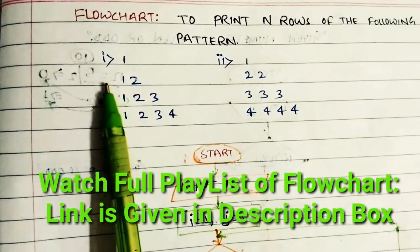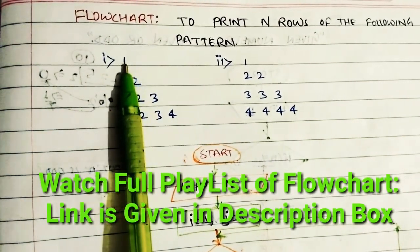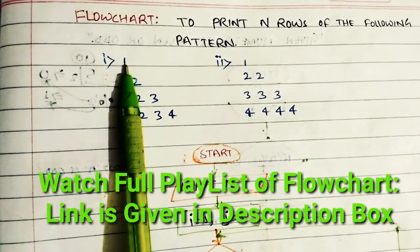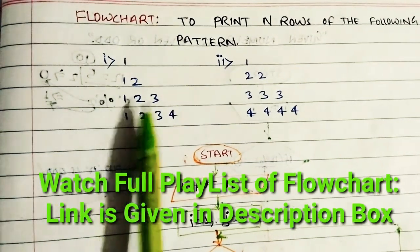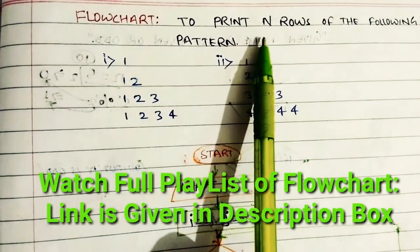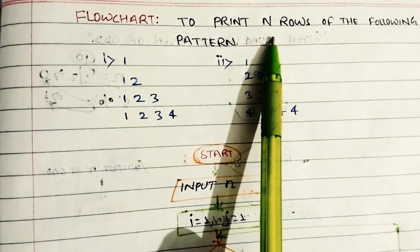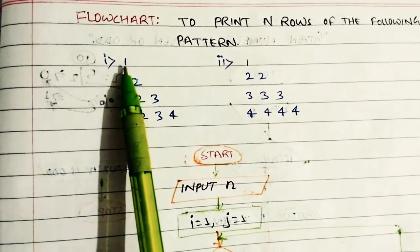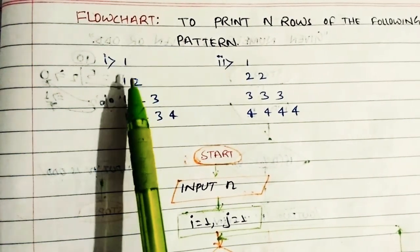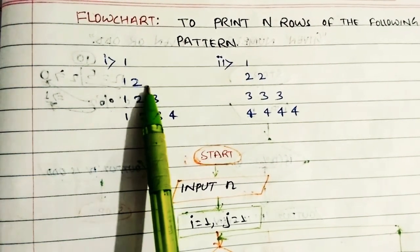Let's focus on the first pattern. First, what do we need to consider? The N value — here N represents the number of rows and is the input. If N is 4, then in the first row there is 1 item, and in the second row there are 2 items.